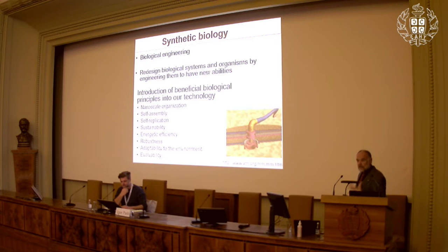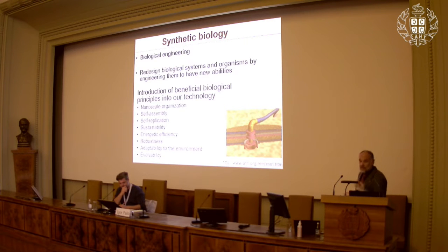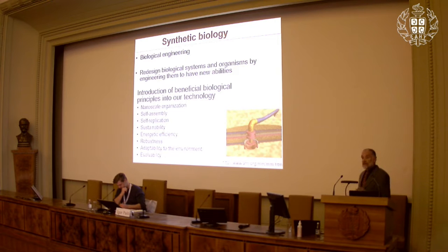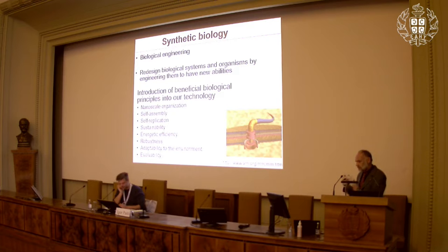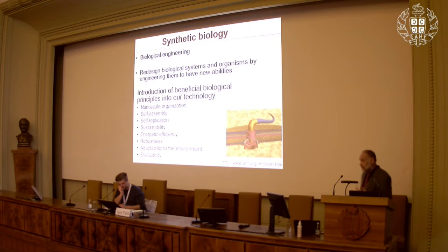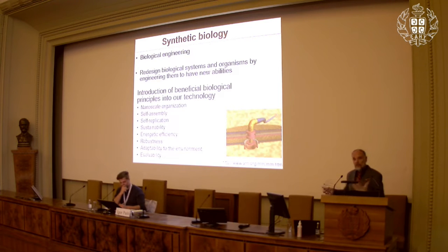Biological systems have many principles that would be great to apply in our technology. They are atomically precise — structured at the nanoscale. They're able to self-assemble, self-replicate. They're sustainable. They have high energy and material efficiency through recycling. They're robust, able to adapt to the environment, and able to evolve — many features that would be great to implement in our technology.